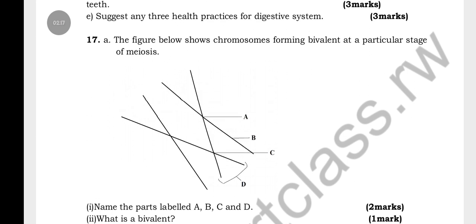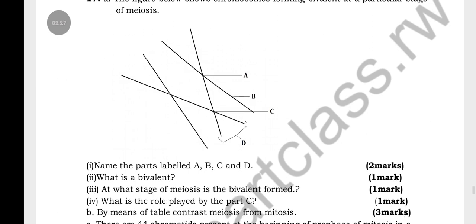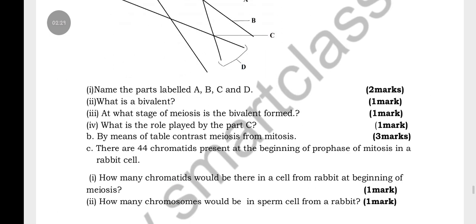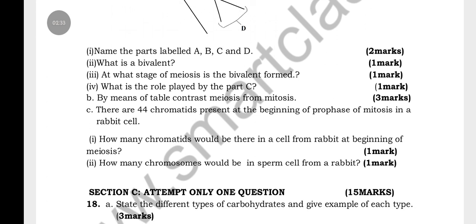Question 17 shows a figure of chromosomes forming bivalents at a particular stage of meiosis. You are asked to name the parts A, B, C, and D, explain what a bivalent is, identify at which stage of meiosis the bivalents are formed, and describe the role played by part C.